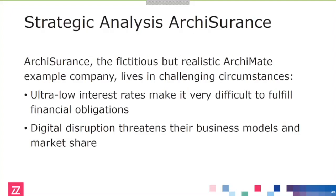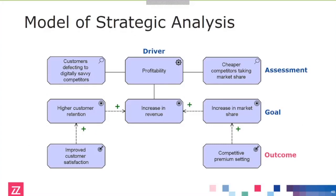There's also digital disruption from all kinds of fintech companies that really threatens the business models of these large insurance companies — they nibble away at the edges. What they've created is a model of their strategic analysis, simplified as this is just an example. Their main drivers are of course profitability, and they see that customers are increasingly defecting to digitally savvy competitors — modern insurance companies that do everything on the web — and that some competitors are a lot cheaper and taking market share because their premium is not really competitive.